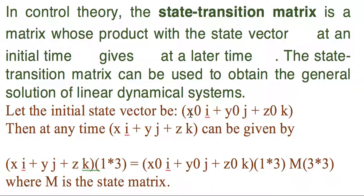So let's say the initial state vector that is at t0 is x0 i cap plus y0 j cap plus z0 k cap. So we are considering a simple three-dimensional vector in our example.